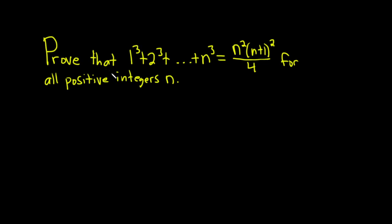In this problem we're going to prove that 1 cubed plus 2 cubed plus dot dot dot plus n cubed is equal to n squared times n plus 1 squared divided by 4 for all positive integers n. We're going to do it via the principle of mathematical induction. Before we jump into the proof, I want to show you that you can rewrite what we have here in another way using summation notation, which I think adds more clarity to the proof.